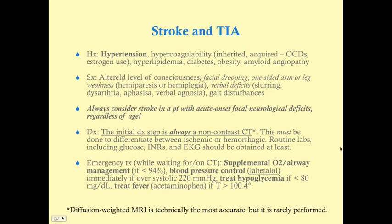Stroke symptoms include altered level of consciousness, facial drooping, one-sided arm or leg weakness (hemiparesis or hemiplegia), verbal deficits like slurring, dysarthria, and aphasia, as well as gait disturbances and visual field deficits — particularly homonymous hemianopsia. You should always include stroke in the differential for any patient with acute onset focal neurologic deficits, regardless of age.